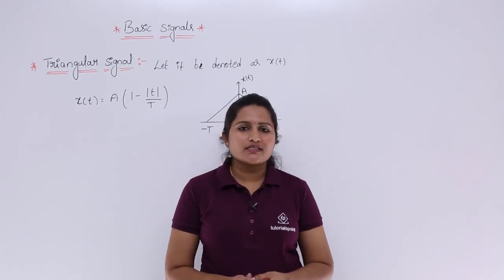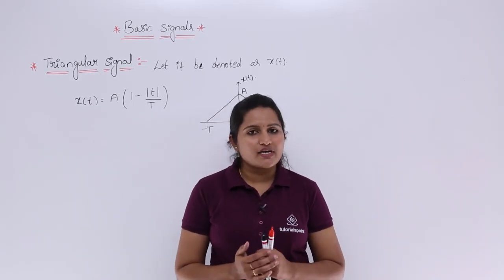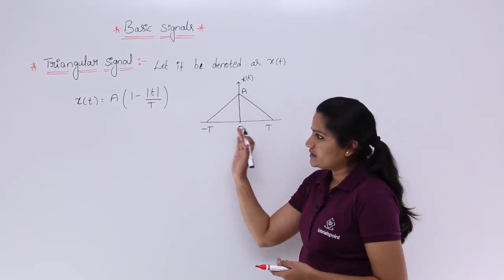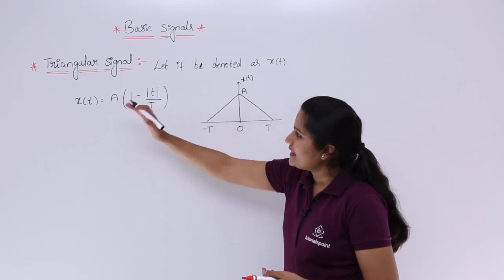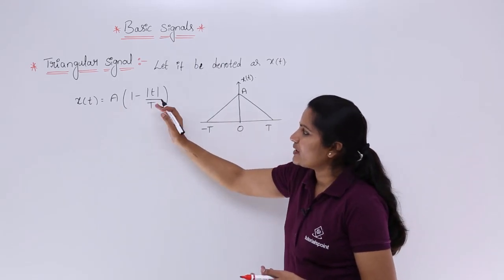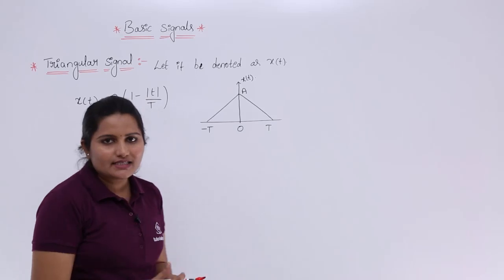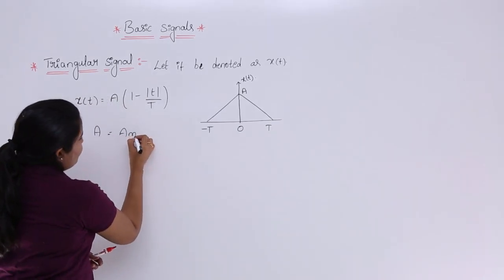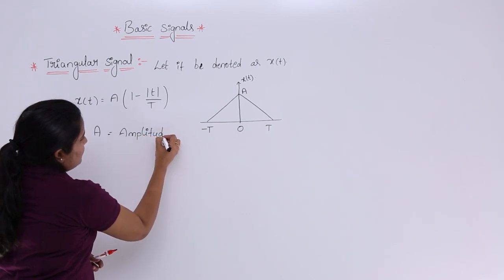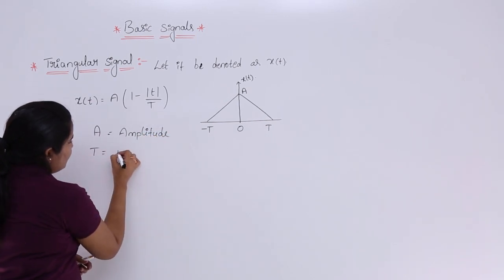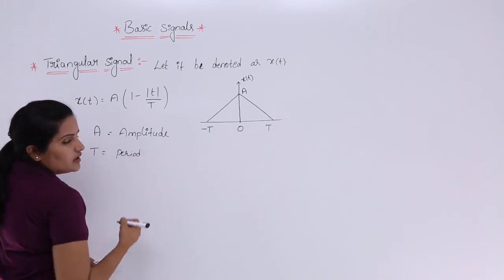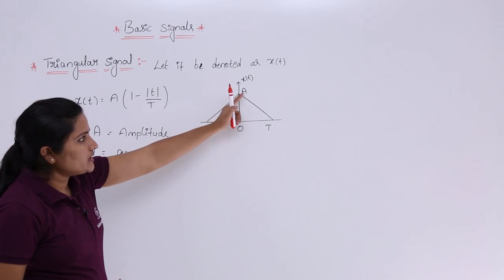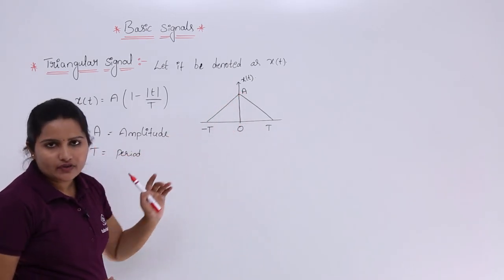In this video we are going to discuss the triangular signal or triangular pulse. The triangular signal is defined as x(t) = A · (1 − |t/T|), where A is the amplitude of the triangle and capital T is the time period of the triangle.